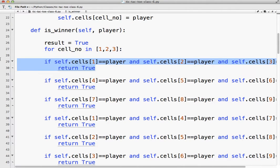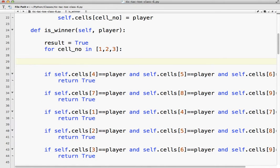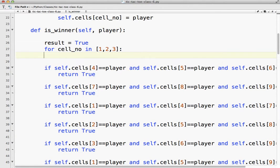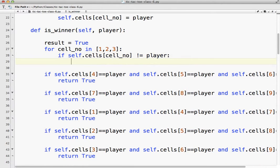Okay, so we've got 1, 2, and 3 here. So we want to basically replace this with what we're going to put in here. So notice the numbers are 1, 2, 3. Okay, so for cell number in 1, 2, 3. So if self.cells, cell number, does not equal the player.